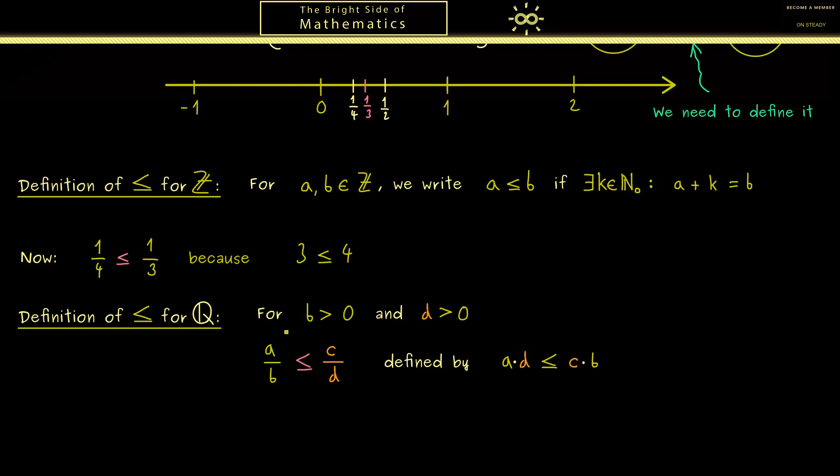However, it would break when we have negative numbers in the denominator. Of course, since we calculate with equivalence classes when we talk about fractions, we can just exclude these cases. And indeed, what we get is an ordering for all rational numbers that fits with the number line here.